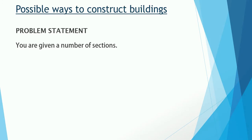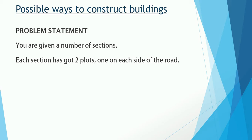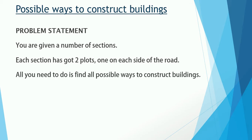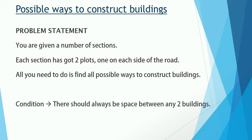You are given a number of sections. Each section has got two plots, one on each side of the road. All you need to find is all possible ways to construct buildings in these sections. The condition is that there should always be a space between any two buildings you construct. There is a road in the middle and on either side of the road you can construct buildings.